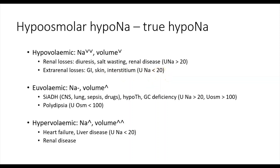Essentially the opposite of hypovolemic hyponatremia is hypervolemic hyponatremia, where the patient presents in a fluid overload state, which can be picked up from clinical examination. In this scenario, the fluid overload is due to a hyperactivated renin-angiotensin-aldosterone system in the setting of heart failure, liver failure, or significant kidney disease — particularly nephrotic syndrome — because low albumin leads to third spacing and shifts of intravascular fluid into the interstitial space due to reduced oncotic pressure.